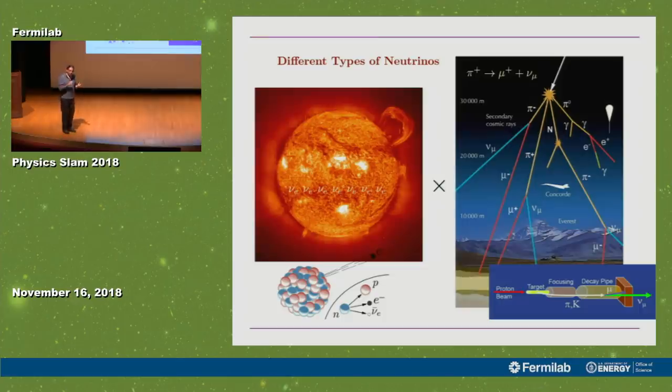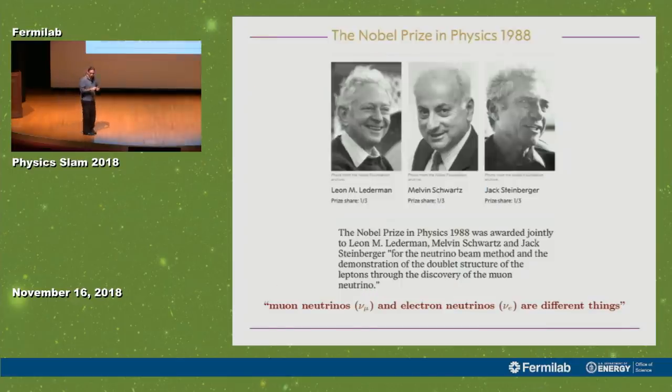If you don't believe me that they're different particles, we're very sure that this happened because these people got the Nobel Prize in 1988 for proving that this is actually true. The electron neutrino and the muon neutrino are different particles. This is Leon Lederman that many of you may have seen before. He was a Fermilab director for a long time, and he passed away earlier this year. Their job was to show that the muon neutrino and the electron neutrino are different particles.